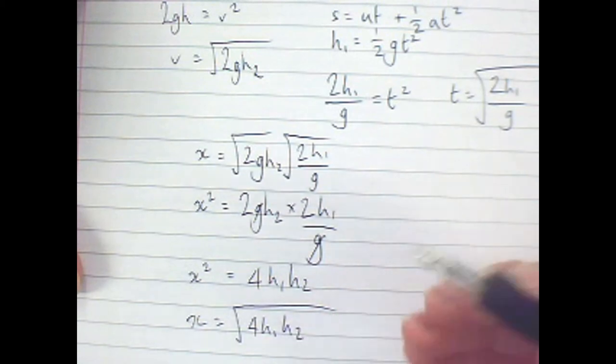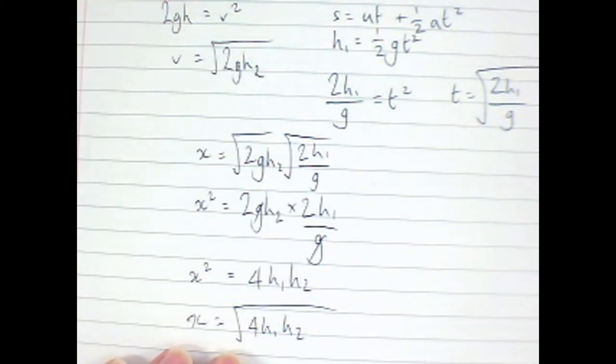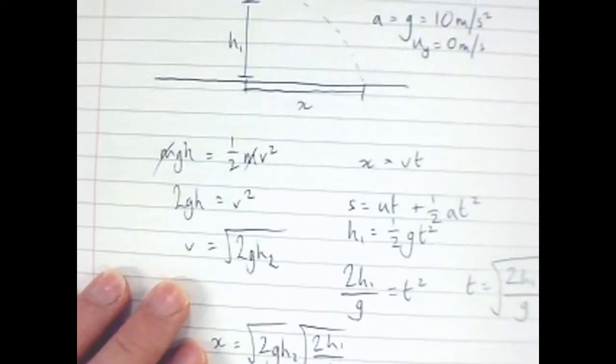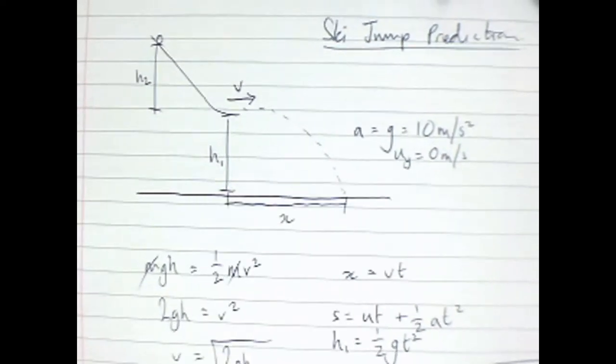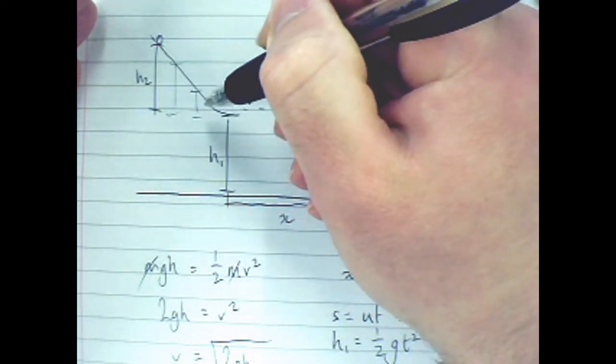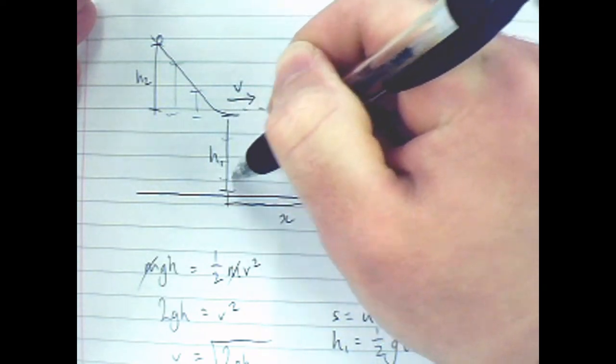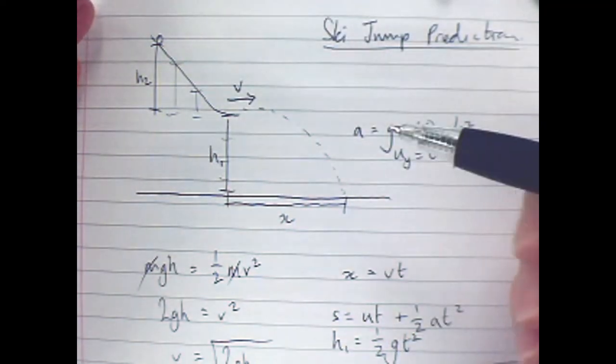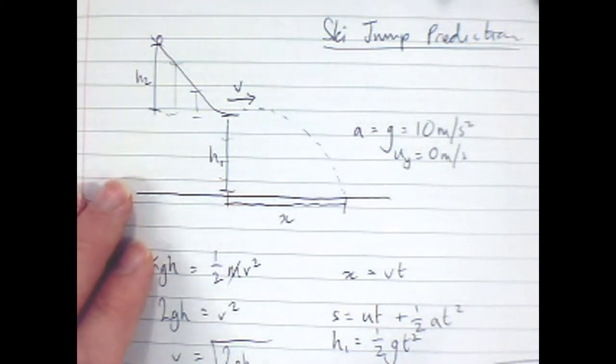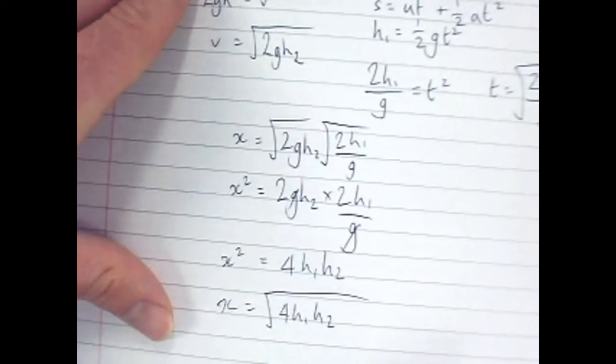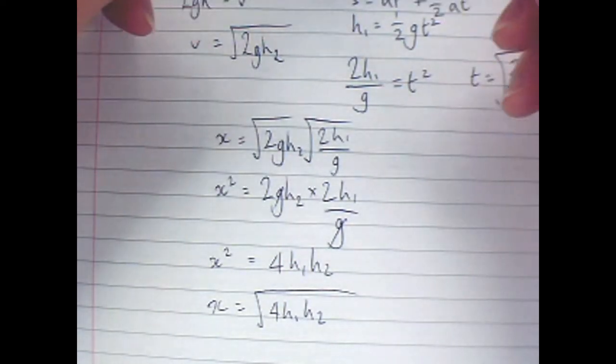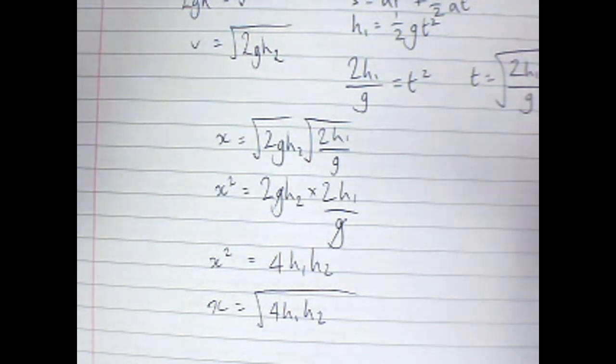So I can use this little expression here, a very simple little expression for X, to predict how far the projectile will go. So once we've actually done this practical, either taken a range of different heights up the ramp, or actually changed this, a range of different heights of the ski jump, we can therefore collect our data for X, compare it to our predicted data, and we'll be able to get a real quantitative analysis, a quantitative evaluation of the ski jump practical there.